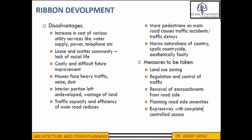The problem of ribbon development is a very complex problem involving political, technical, and legal measures for its solution. It requires a cooperative effort by legislators, town planners, the traffic department, and adjacent land owners. The following measures can be taken to avoid these ill effects: land use zoning to check undesirable building activities in the vicinity of highways, regulation and control of traffic using these highways, removal of encroachments from the road, and control of advertisements and obstructions to the view.